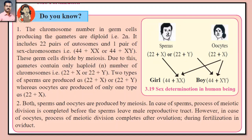Vidyarthi mitrano, tumhaala he maahit ahe ka? Purushanchya andamaadhe 22 plus X, aani strichya andamaadhe 22 plus X - he saman gunasutre astat. Paranthu, purushanchya andamaadhe ek vay-nishchit linga-nishchit karanare gunasutra asate. The chromosome number in germ cells producing the gametes is diploid, i.e., 2n.